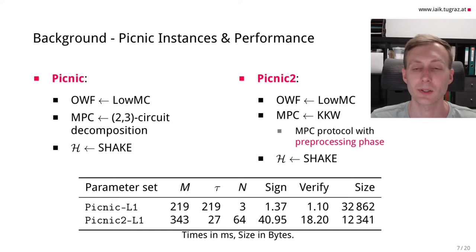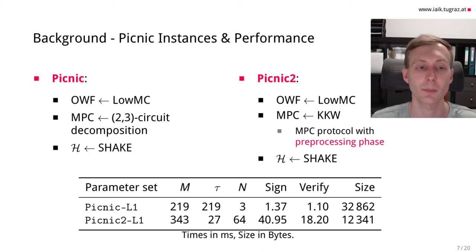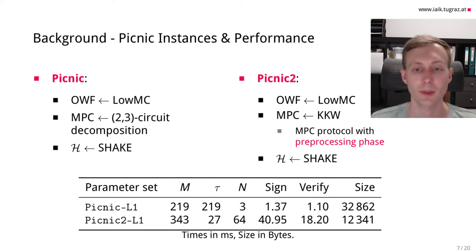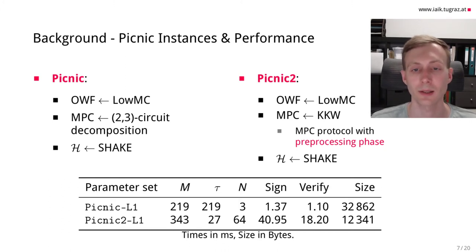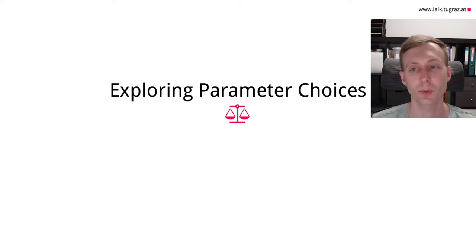In Picnic2, added in the second round of the NIST post-quantum competition, LowMC and SHAKE remain as building blocks, but the MPC system was replaced with KKW, an MPC protocol with a preprocessing phase. This preprocessing phase is run before the actual execution and produces some correlated randomness, which is then used in the online phase. Picnic1 and Picnic2 have very different performance characteristics: Picnic1 has fast signing and verification at around one millisecond but a signature size of around 30 kilobytes, while Picnic2 has much higher signing and verification times but a lower signature size of around 12 kilobytes.